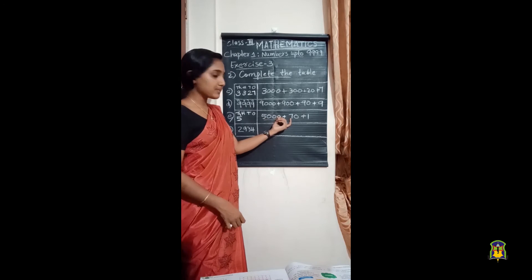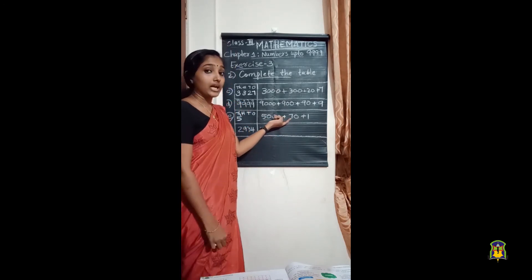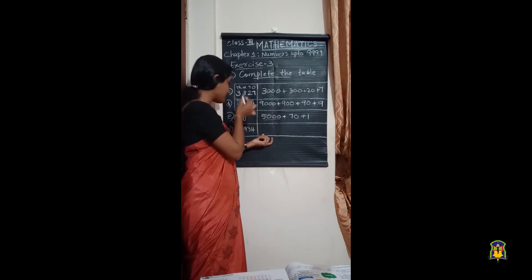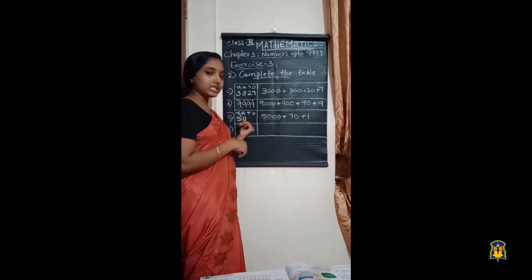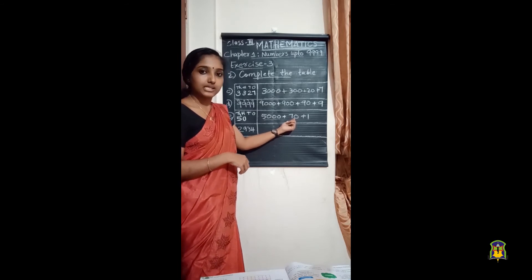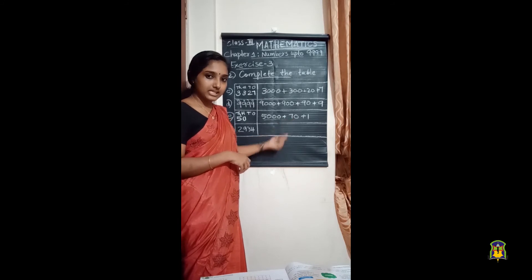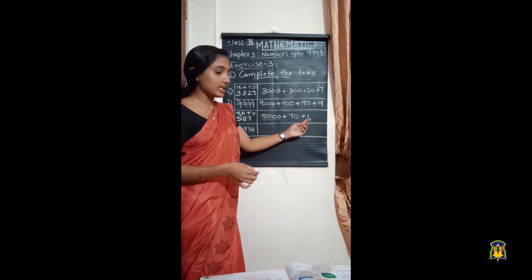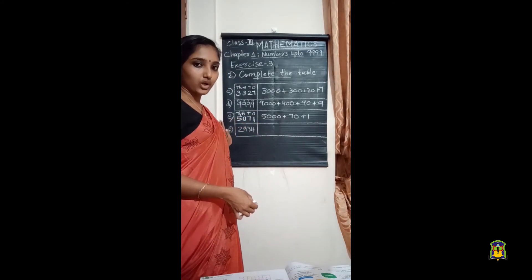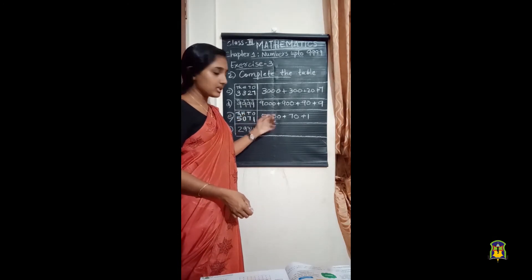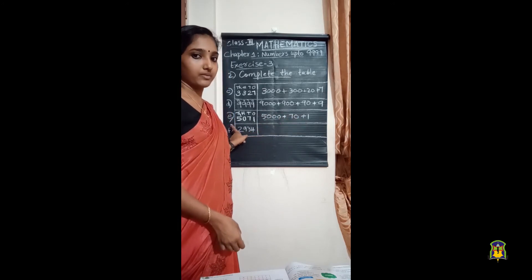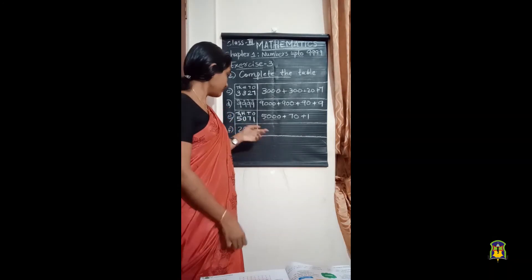The hundreds place is missing, so there is no digit in the hundreds place. When a digit is missing in some place, we write zero there. So in the hundreds place we write zero. Next, seventy — seven tens make seventy, so in the tens place the digit is seven. In the ones place the digit is one. So our number is five thousand and seventy-one: the expanded form 5000 + 70 + 1 gives the short form 5071.